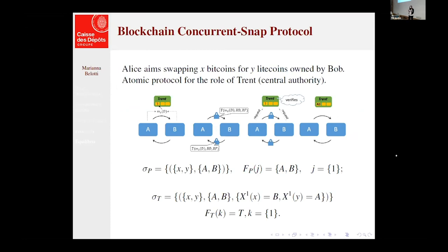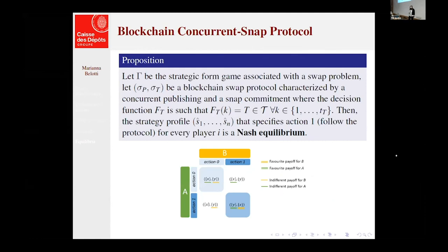But let's take another protocol, for example, concurrent swap protocols where the commitment phase takes place in just one step. And we have a central authority T. So an external one that has to decide whether to unlock or not the transfer. So to allow the commitment. And of course we can see in this case that everything takes place in one step, and we can see from the index J and K that is one, and that FTK is T. So the actor who decides is actually an external one lies in T. And for this case, we were able to prove that action one, so following the protocol is Nash equilibrium.